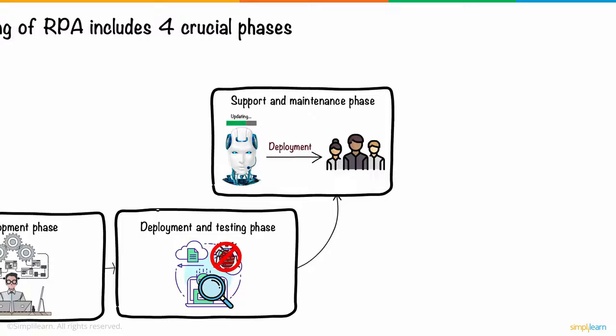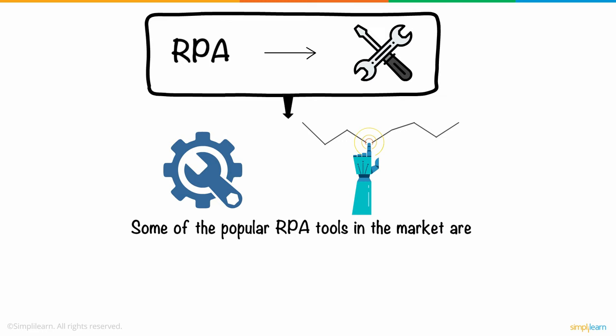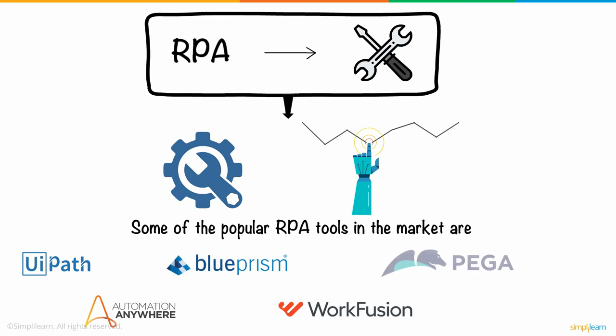To meet the objectives of RPA, tools are used. These RPA tools are software applications that can configure tasks and automate them. Some of the popular RPA tools in the market are UiPath, Automation Anywhere, Blue Prism, WorkFusion, Pega, and Redwood, among others.